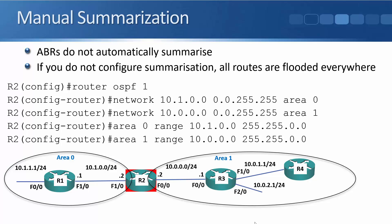The other benefit: if the 10.0.0.0/24 link goes down, routers within area one — R3 and R4 — must reconverge and recalculate. But from R1's perspective in area zero, the summary route 10.0.0.0/16 remains valid. An outage in one area doesn't affect routers in another area. So multi-area OSPF means fewer routes, less memory usage, and outage impact confined to a single area, reducing CPU load on routers — which is why multi-area design is preferred for larger networks.